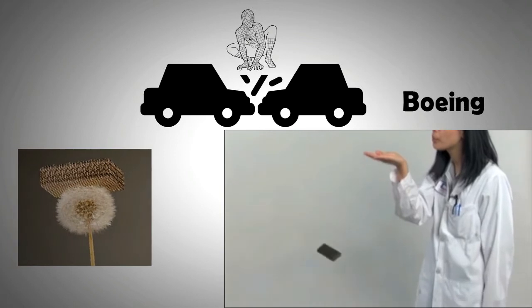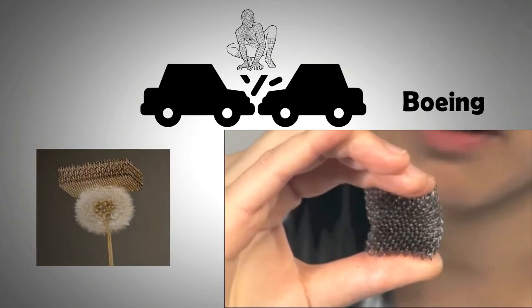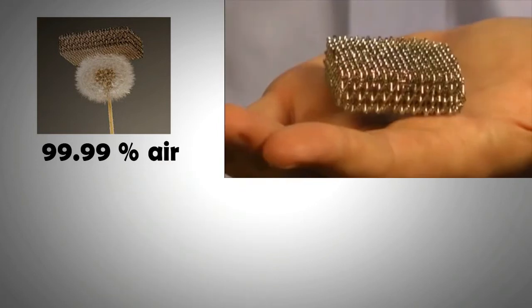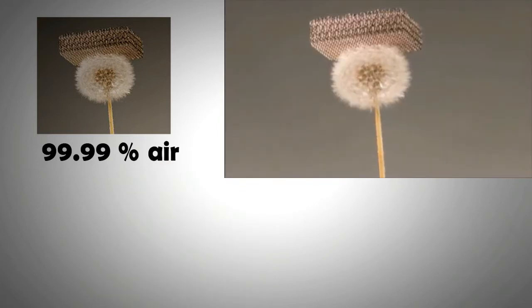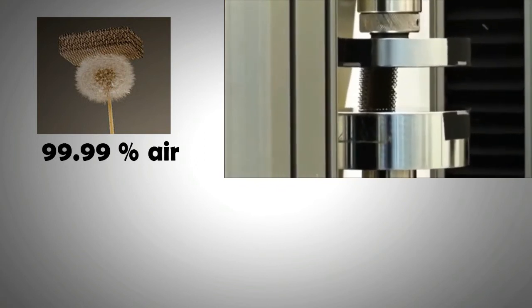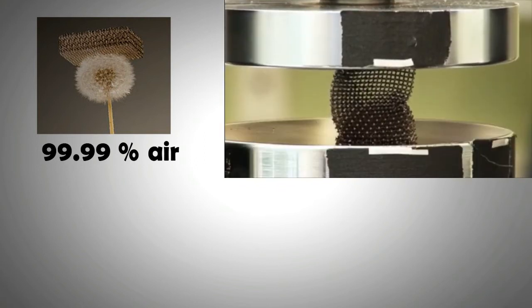The microlattice is a mesh of tubes, each hollow on the inside, creating a material that is 99.99% air but still incredibly durable. The material can also be compressed and manipulated and has extraordinarily high energy absorption.